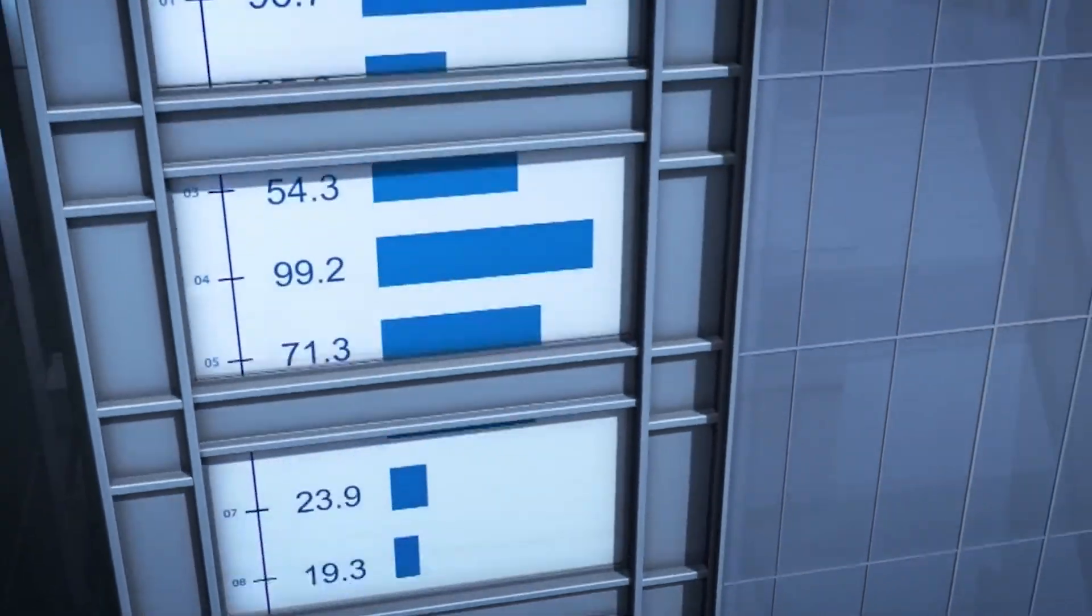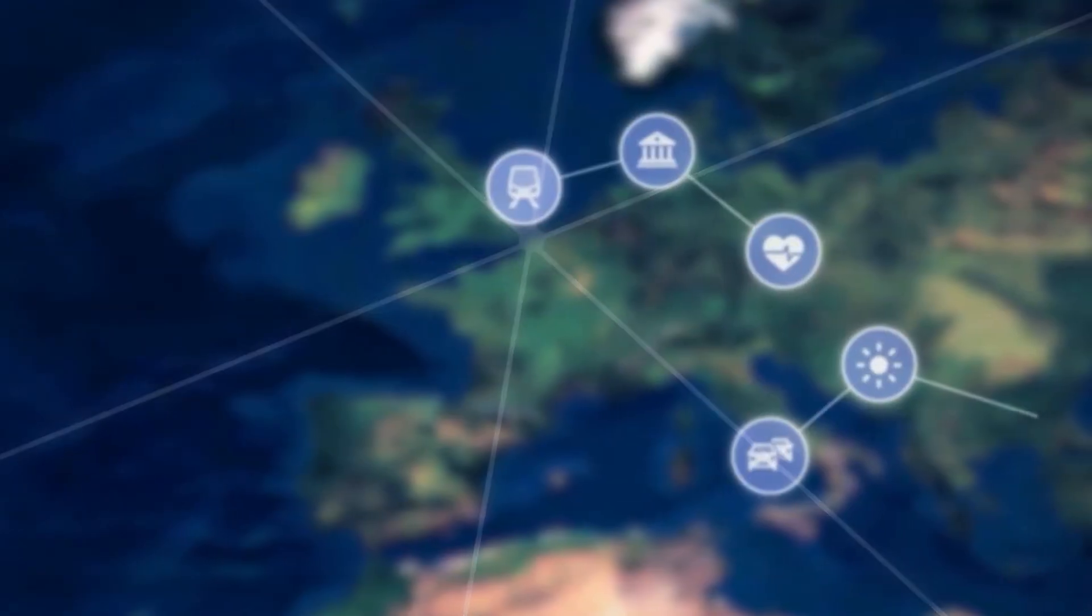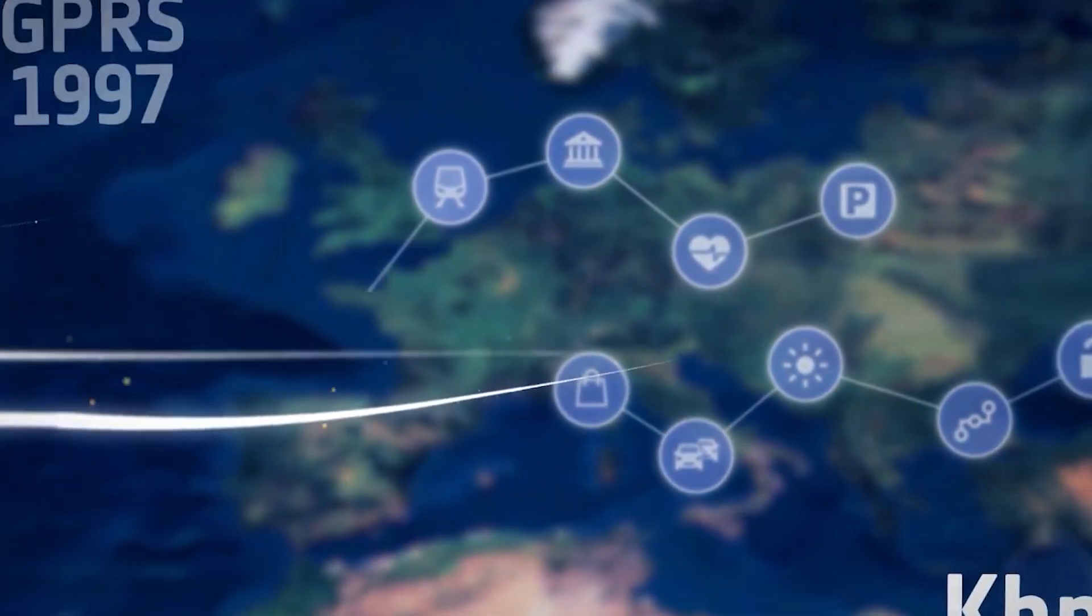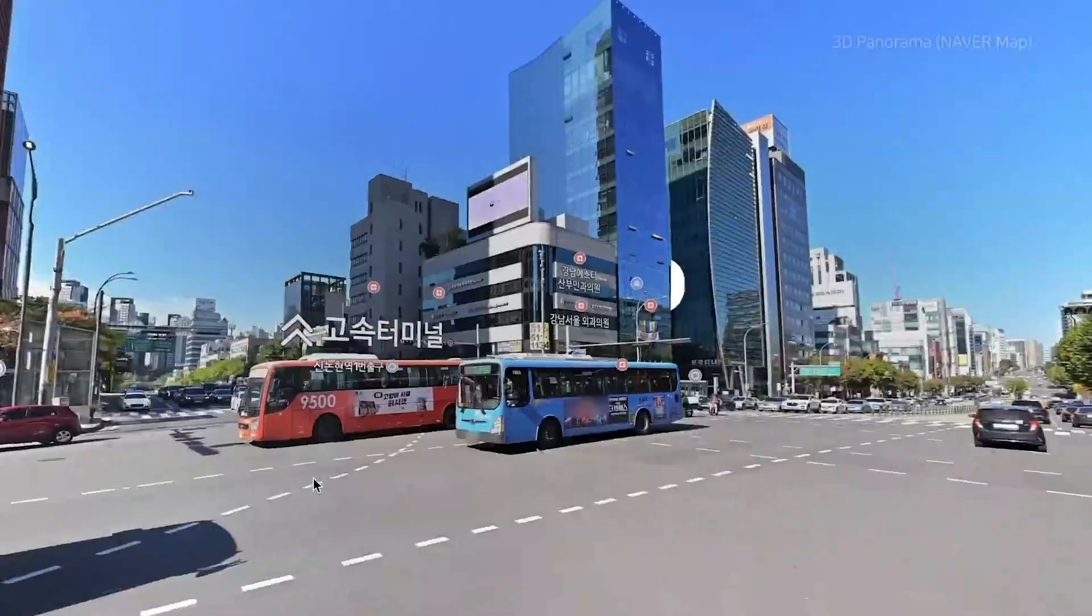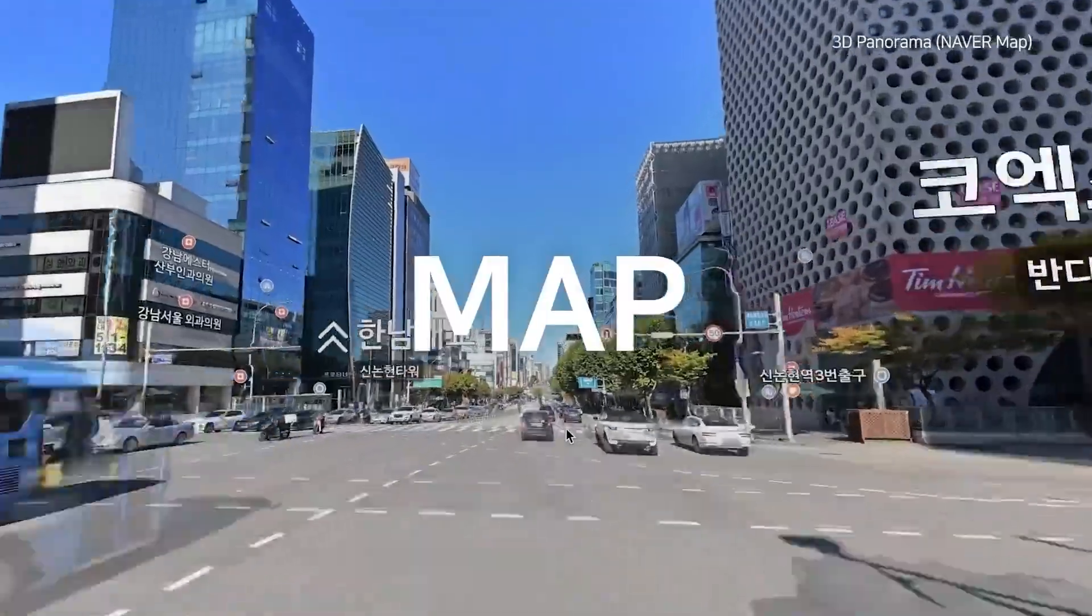The vision is cities as living organisms, constantly sensing conditions through distributed sensors, processing information through centralized AI systems, and continuously adapting operations to optimize countless variables simultaneously. As urban populations continue concentrating, with projections showing over 70% of humanity living in cities by 2050, this intelligence becomes essential rather than optional for maintaining livable environments at unprecedented population densities.